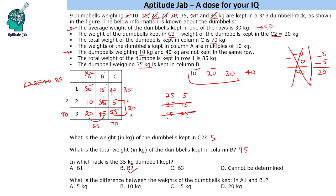What is the difference between the weights of the dumbbells kept in A1 and B1? So A1 is 30 and B1 is 15 kgs, so the difference is 15 kg. So this was the solution to the set and the answers to the questions.